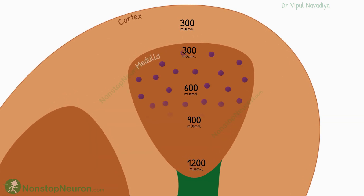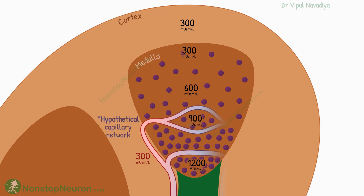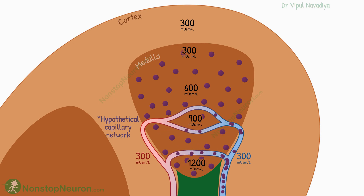In the medulla, the osmolarity of the interstitium increases as we go deeper and deeper. At the apex of pyramids, it can reach up to 1200 milliosmoles per liter. The problem is that the osmolarity of blood plasma is only 300. So if the blood passes through this area just like that, the solutes will diffuse down this concentration gradient from the medullary interstitium into the plasma. This would wash out all the solutes and abolish the medullary hyperosmolarity, and the ability to produce concentrated urine will be lost. Thus, routine capillaries will create a problem in this area.